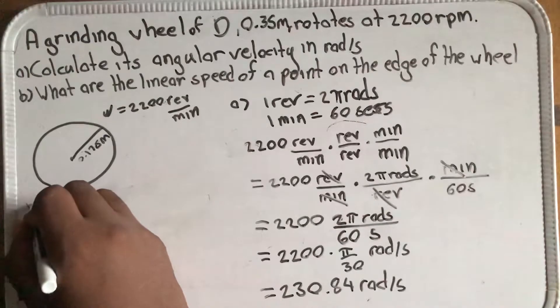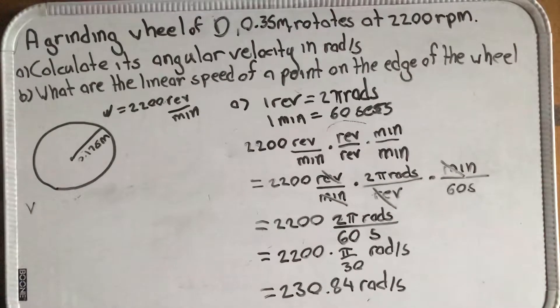Now to find the velocity or the linear speed of a point on the edge of the wheel, we need to know the relationship between the linear speed of this point on the edge of the wheel and the angular velocity. When we're dealing with rotational motion, the assumptions we're going to make is that this is a rigid body.